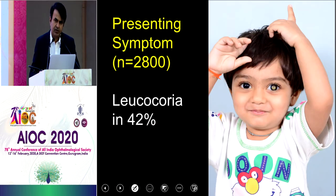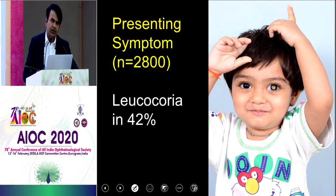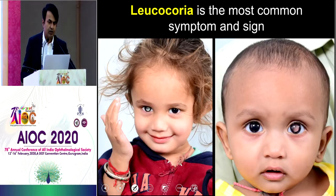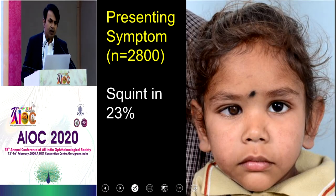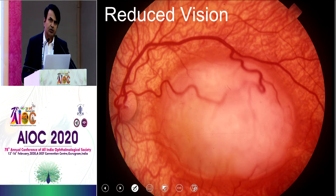Clinical manifestations are very straightforward. The most common symptom and sign is leukocoria — parents come with a child manifesting with white reflex, and that's what you see clinically as well. The second most common symptom and sign is squint, in about 23% of patients — either esotropia or exotropia depending on the location of the tumor and age of onset. The third, in older children, would be reduced vision.